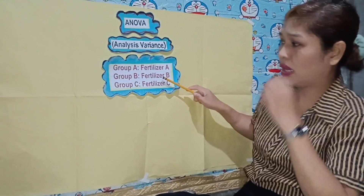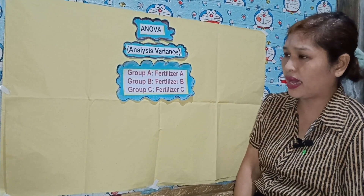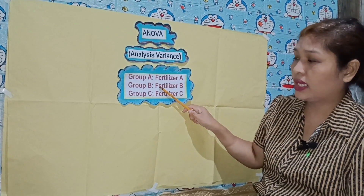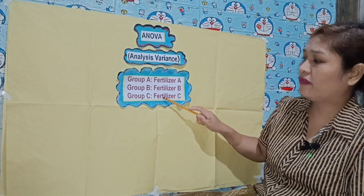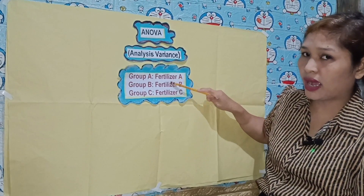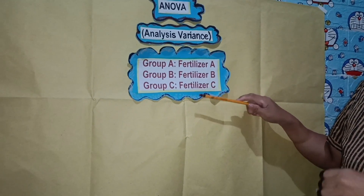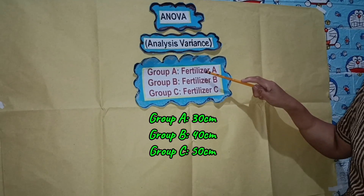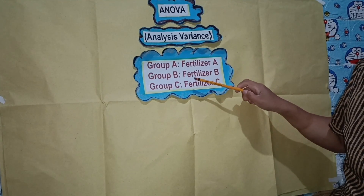How does ANOVA work here? After a few weeks, you measure the height of the plants in each group. You find the average height: fertilizer A is 30 cm, fertilizer B is 40 cm, and fertilizer C is 50 cm. Now you ask: are these differences due to the fertilizer, or are they just random?